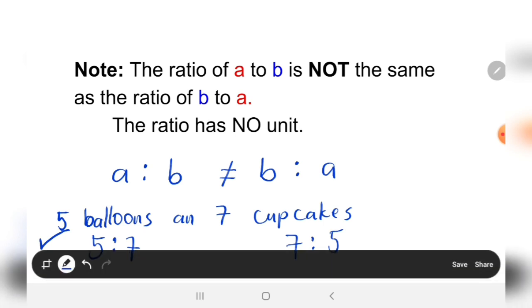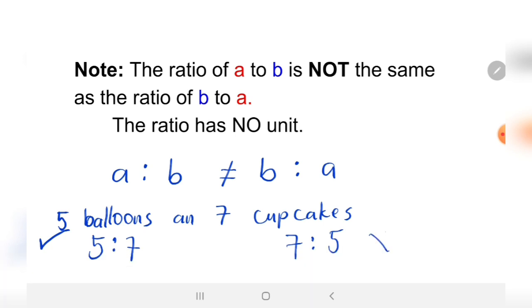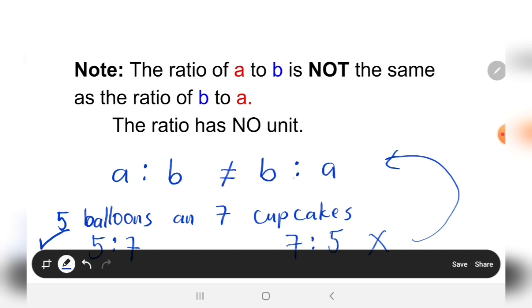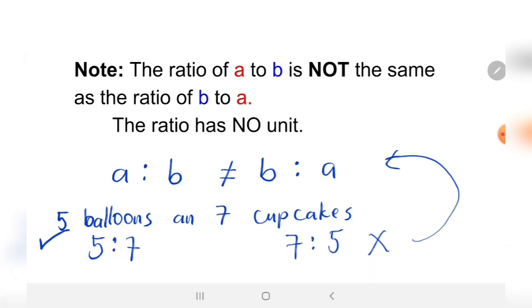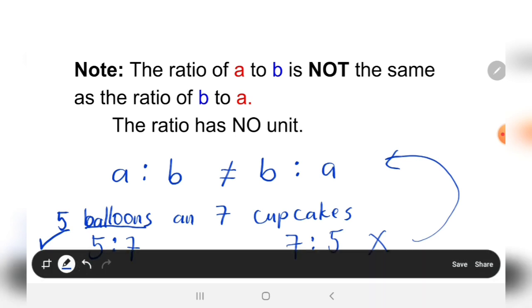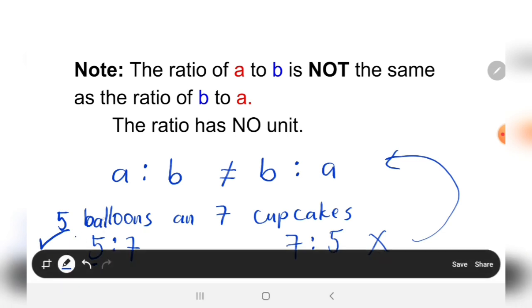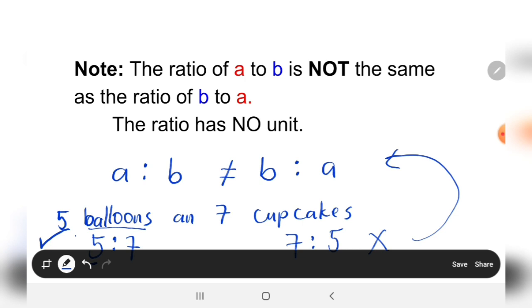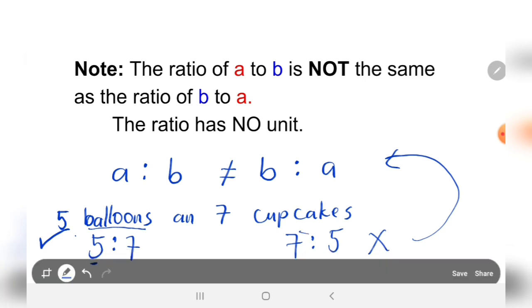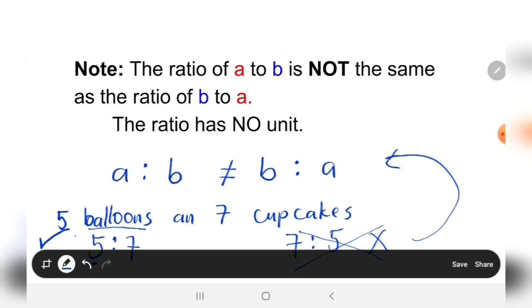The answer is no, because it states that a to b is not equal to b to a. That means that whenever the first quantity will be your first value - if this is the first quantity, the balloons - then write the size or the quantity of the balloons, and then here the cupcakes. Not cupcakes and balloons - this is not correct.